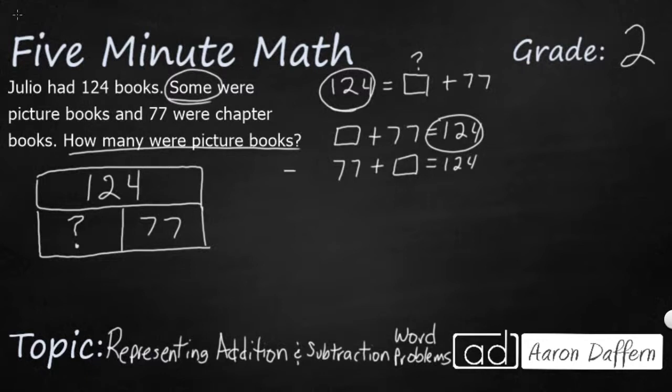But we could also write two subtraction sentences. So we're 124 and then we're going to minus two of our terms. 124 minus our unknown is 77. Doesn't help me because I'm not really sure what that number is. I don't know my facts big enough, but I can do this. 124 minus 77. These are all related fact family terms. That's why fact families are so important because look, I can do 124 minus 77.